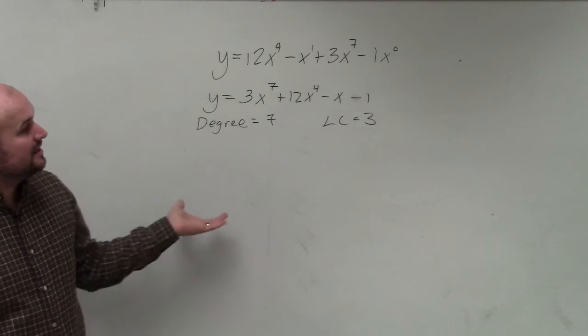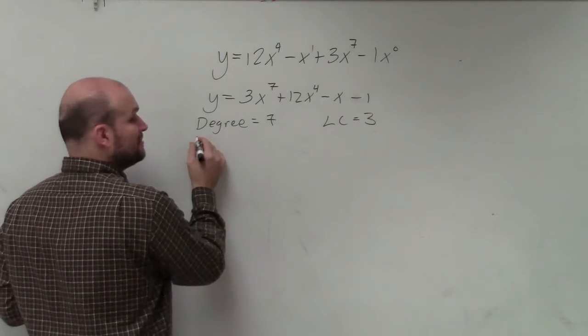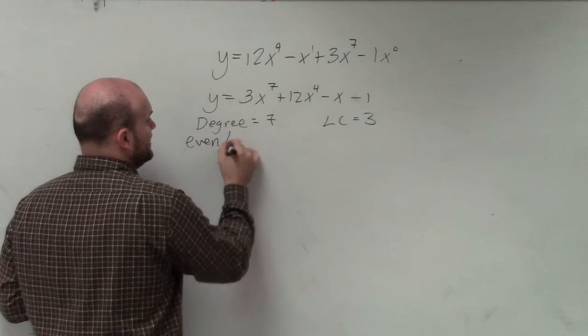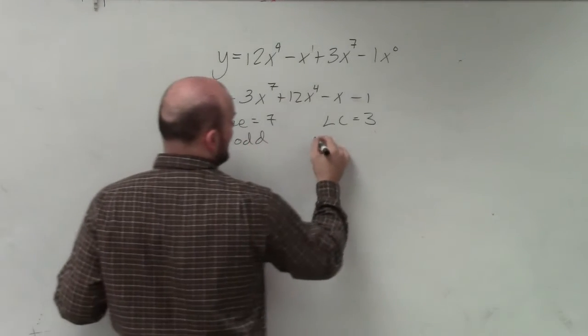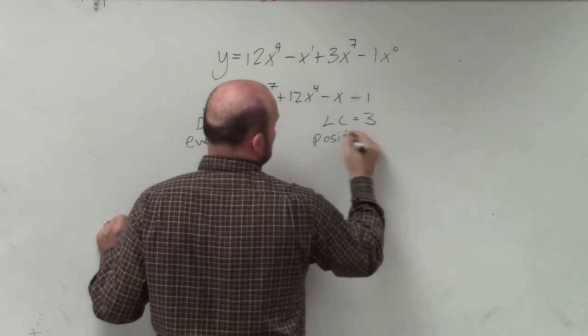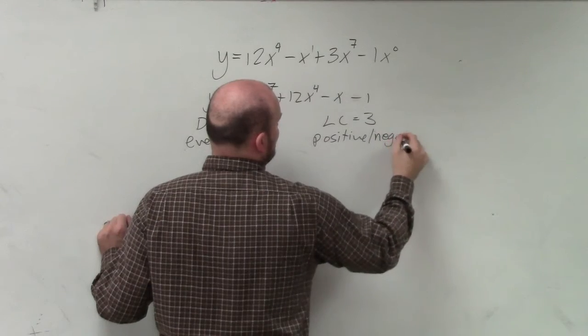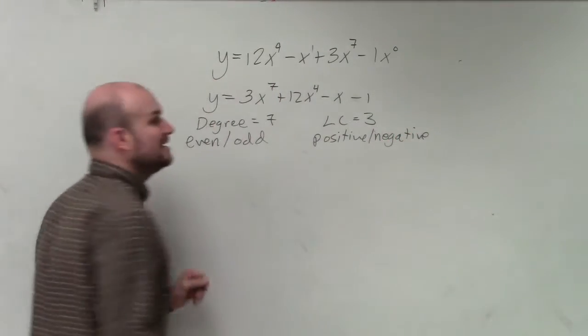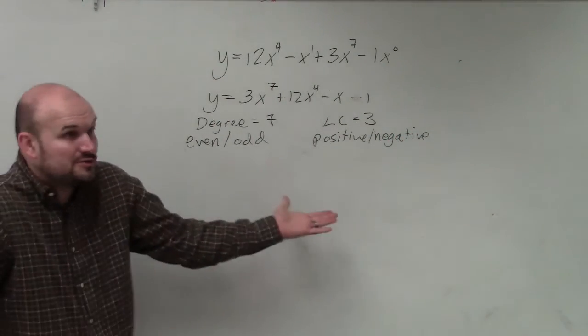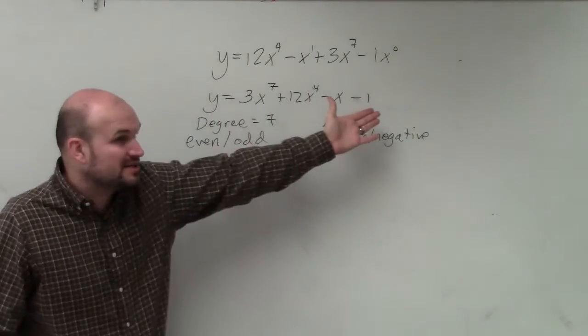Now that we've identified the leading coefficient and the degree, all we simply need to do is determine for the degree, is it even or is it odd? Is the leading coefficient positive or negative? And you don't need to write this down, but I'm writing it in there just to kind of make it clear. I mean, there's only two choices. It doesn't really matter what the number is, right?